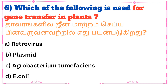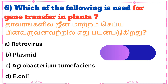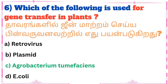Sixth question: Which of the following is used for gene transfer in plants? Answer: Agrobacterium tumefaciens.